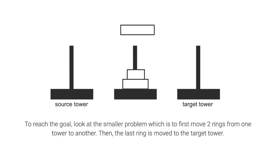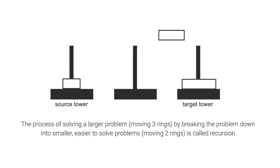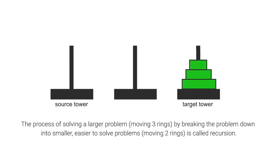To reach the goal, look at the smaller problem, which is to first move two rings from one tower to another. Then, the last ring is moved to the target tower. The process of solving a larger problem — moving three rings — by breaking the problem down into smaller, easier to solve problems — moving two rings — is called recursion.